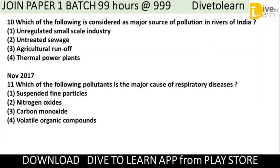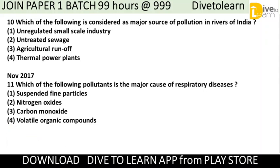Next question: Which of the following is considered a major source of pollution in rivers in India? Options are unregulated small-scale industries, untreated sewage, agricultural runoff, and thermal power plants. The correct answer is untreated sewage, because when all sewage flows into rivers, they automatically become polluted.